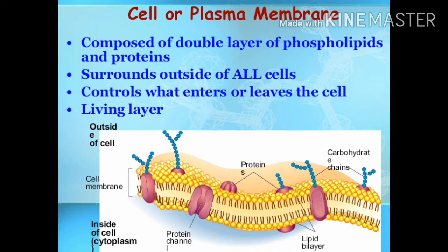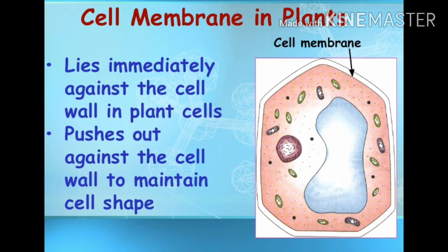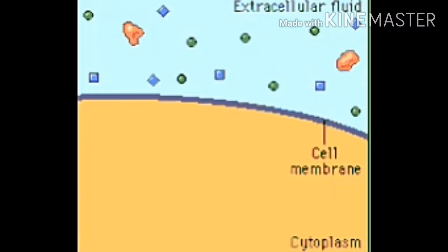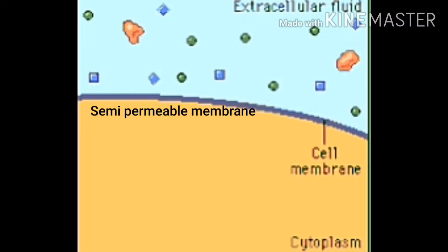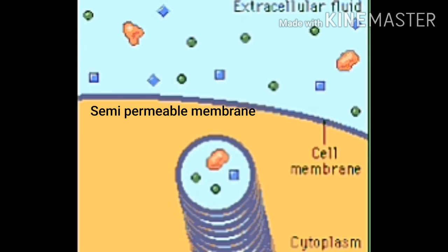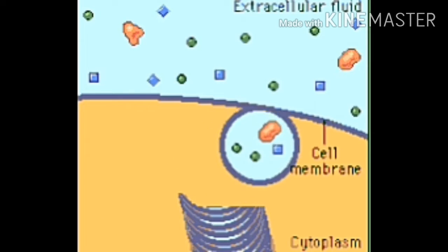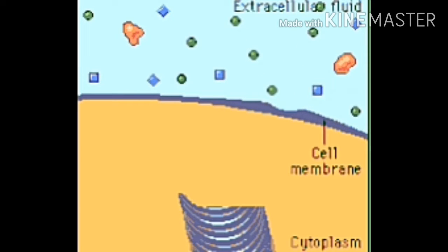Plasma membrane or cell membrane. This is a thin, delicate and elastic membrane which forms the outer layer of a cell. It allows only some substances to pass through it. Therefore, it acts as a semi-permeable or selectively permeable membrane. It helps to maintain the shape of the cell.